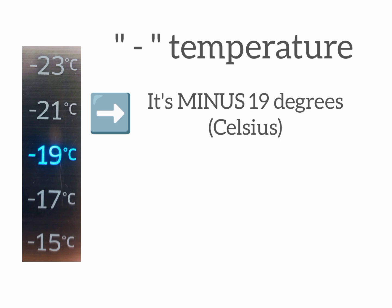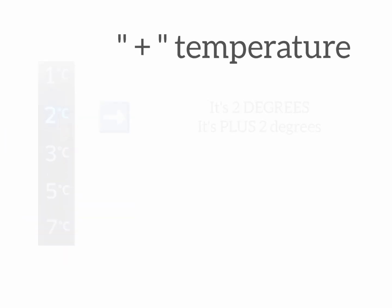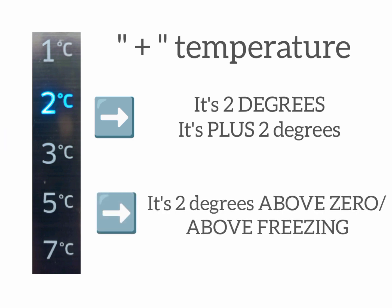In this example it's minus 19 degrees. Or you can also say it's 19 degrees below zero or below freezing. And here it's 2 degrees, or it's plus 2 degrees — you can say it's 2 degrees above zero or above freezing.